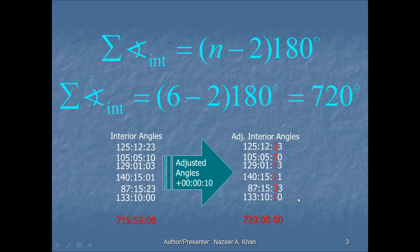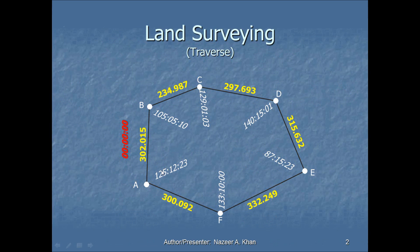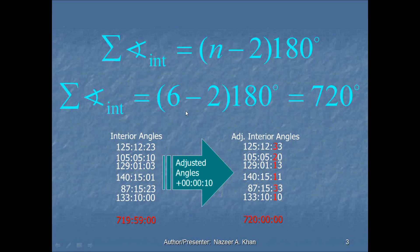The first step in our procedure is to check and adjust the interior angle if necessary. We have a formula: summation of interior angle is equal to n minus 2 times 180 degrees. Now, the n that we are looking at represents the number of sides to the traverse or the number of interior angles. They are both the same. When we look at our n, we are going to start at 1, 2, 3, 4, 5, and 6. We have 6 sides, 6 interior angles, so that n becomes 6.